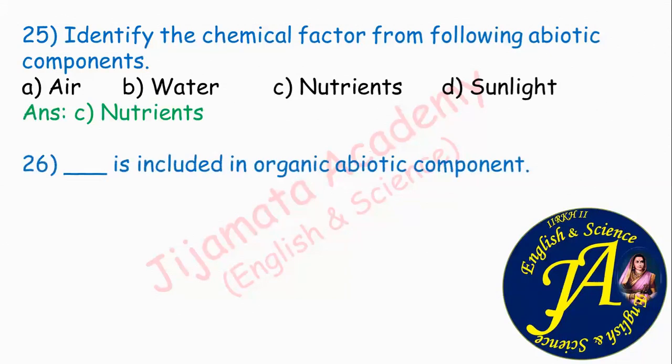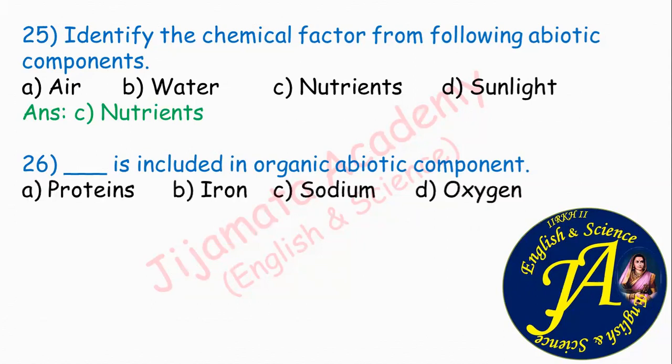Dash is included in organic abiotic components. Options are proteins, iron, sodium, oxygen. All are chemical abiotic components, but chemical abiotic components are divided into organic and inorganic. The organic group includes all nutrients — proteins, carbohydrates, and fats. Therefore, option A is correct: protein is an organic abiotic component. Iron, sodium, and oxygen are inorganic abiotic components.